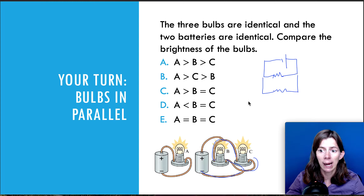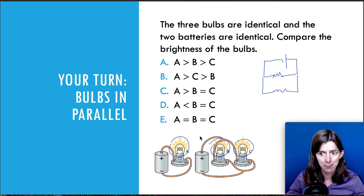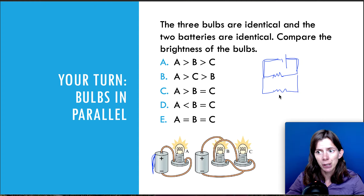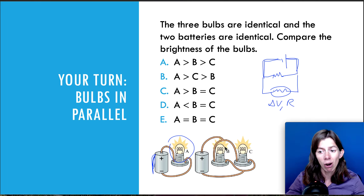With that in mind, how are the brightnesses going to relate to each other? All of the bulbs are identical, so all the individual bulbs have the same resistance. All of them are getting the same exact voltage. Bulb A is getting the full voltage, and bulbs B and C are also getting the full voltage because they're connected in parallel. Since bulb C has the same voltage and the same resistance as bulb A, it must have the same current — so they're all going to have the same brightness.